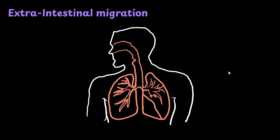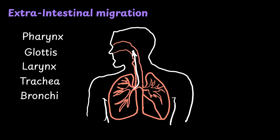Then the larva does something really unusual — it tries to exit the body using the respiratory system. Currently in the alveoli, it moves to the bronchi, trachea, larynx, glottis, and the pharynx in reverse fashion. Once it reaches the pharynx it has two options: it can exit either through the nostril or through the mouth. It is not uncommon to see Ascaris worms crawling out of a sleeping baby's nose. By the time the larva reaches the pharynx it is mixed with mucus, and is often mistaken for phlegm that we usually spit out.